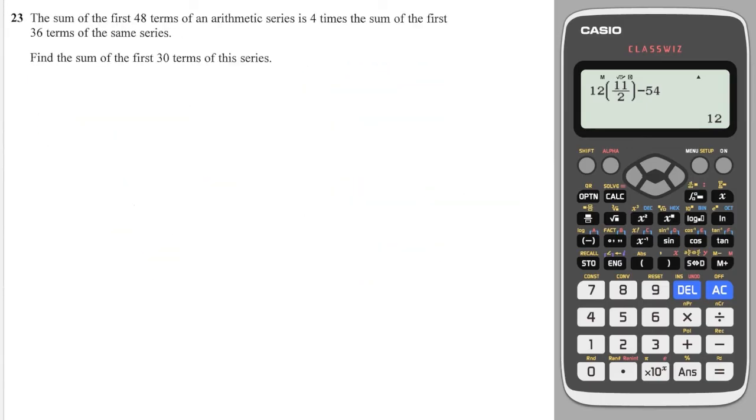Okay, final tricky question alert. The sum of the first 48 terms of a series is 4 times the sum of the first 36 of the series. Wowza. Okay, so it means that the summation up to 48 is 4 times bigger than the first 36. So if I want them to equal each other, then because this one is bigger, I'm going to have to times this one by 4 in order to make it equal to each other. Okay, so let's use our formula. We know our formula. It is n over 2, 2a plus n minus 1 times d.